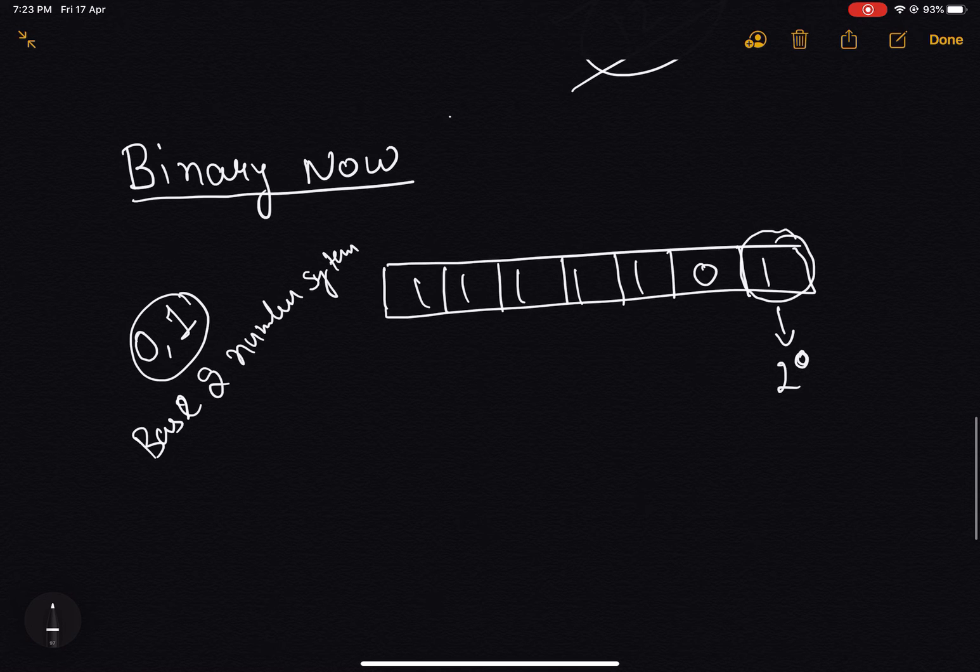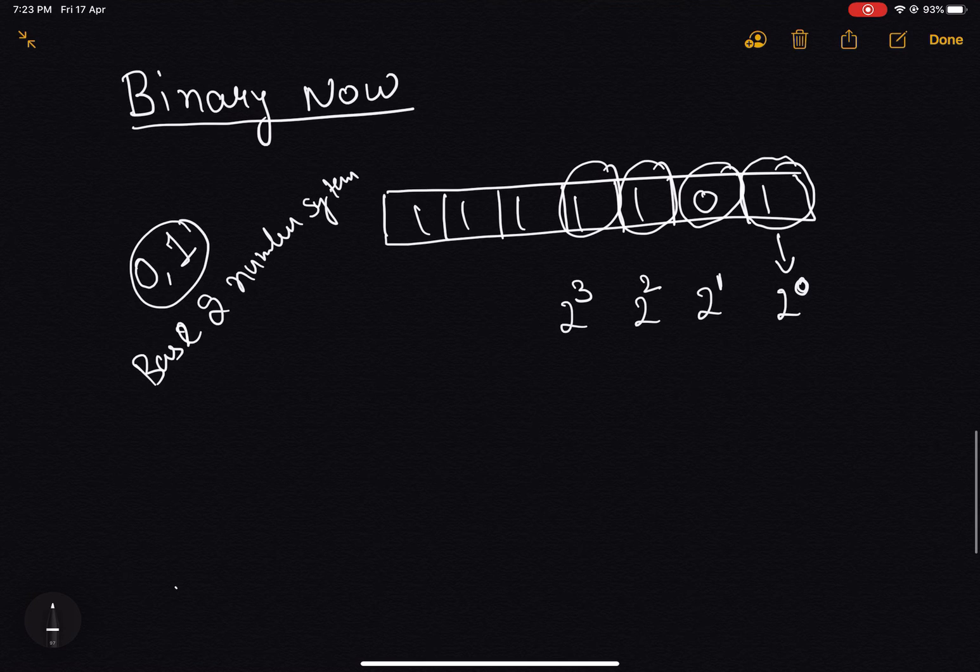Likewise, in the binary system, we can say this place is 2 to the power 1 place and this place as 2 to the power 2 place and this place as 2 to the power 3 place. Now if I want to write the expression for it, it will evaluate something like this.